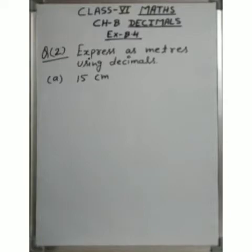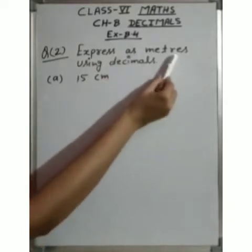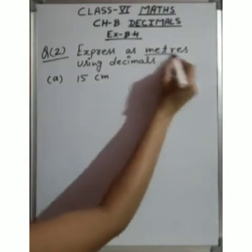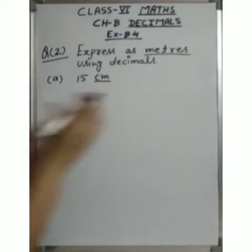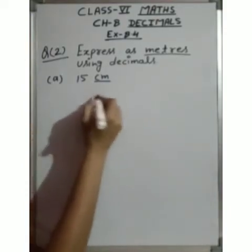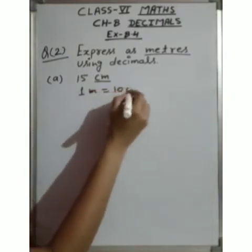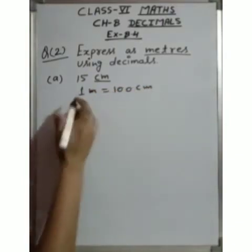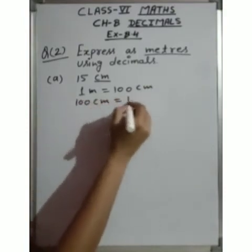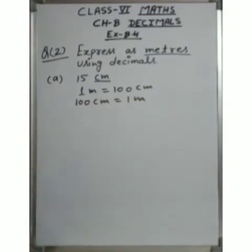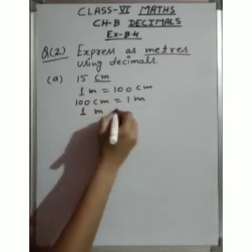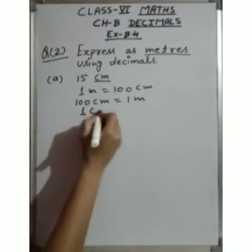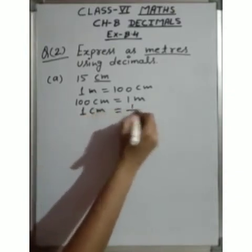Second question: express as meters using decimals. We need to show the answer in meters — converting centimeters to meters. We know that 1 meter equals 100 centimeters, or 100 centimeters equals 1 meter. Therefore, 1 centimeter equals 1 upon 100 meter.